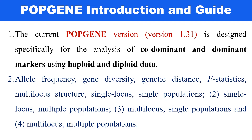Currently the Popgene version available is 1.31. It is designed specifically for codominant and dominant marker data, and accepts haploid and diploid data analysis. This software can analyze allele frequency, gene diversity, genetic distance, F statistics, multi-locus structure, single locus single population, single locus multiple populations, and more.